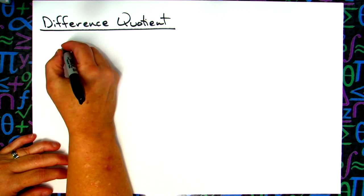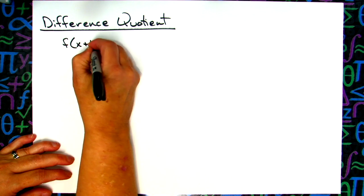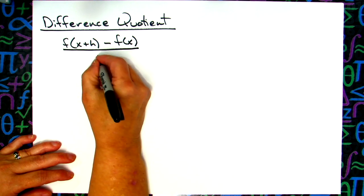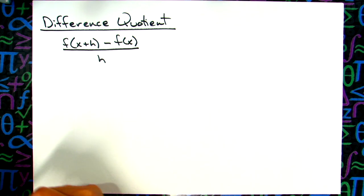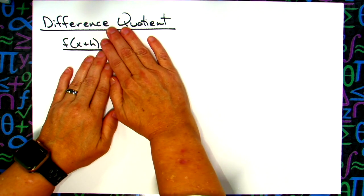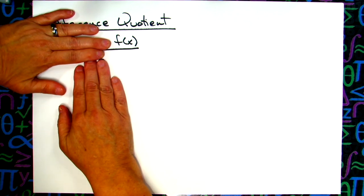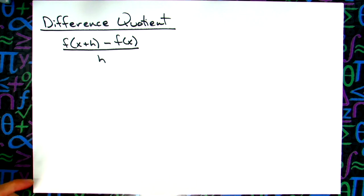Difference quotient. We're going to look at it in one form this year since it's pre-calc. If you just randomly watch some video on YouTube on it, you might see the formula written in a different form. There's about three or four different forms. The difference quotient that is in your book that we're going to use this year is going to be f of x plus h minus f of x all over h.